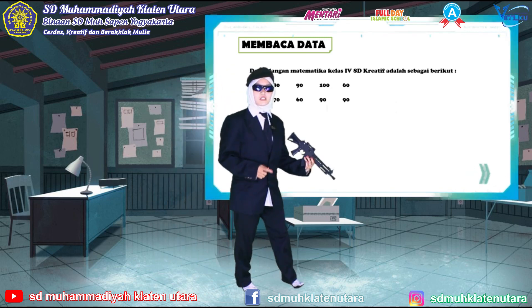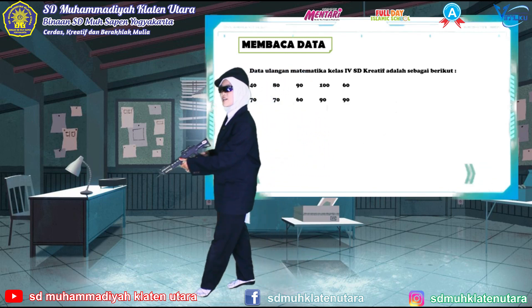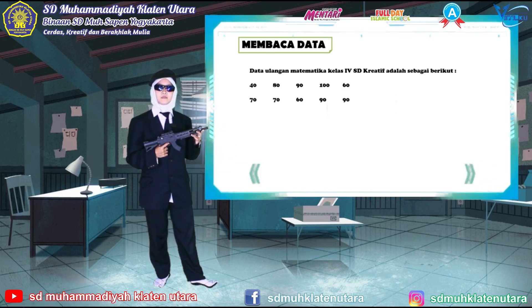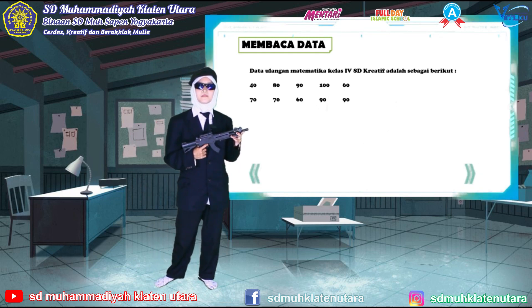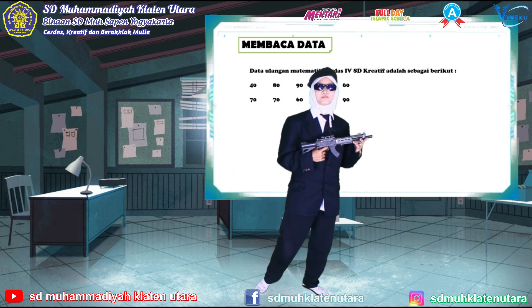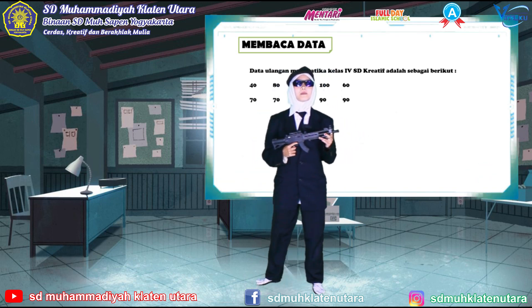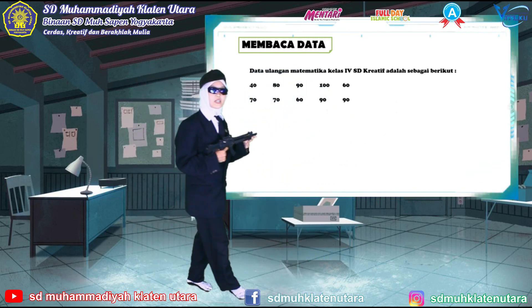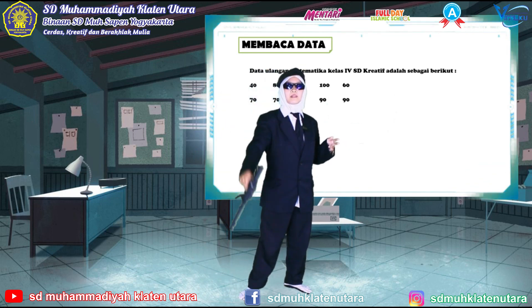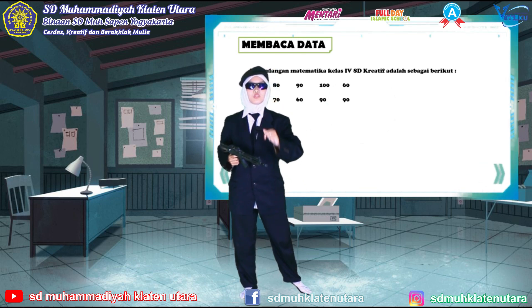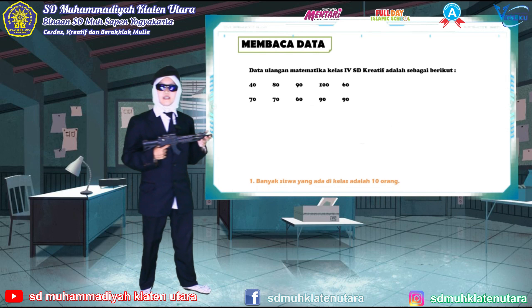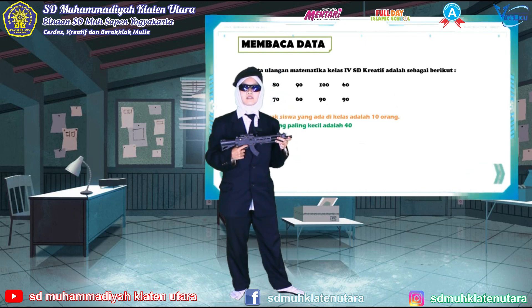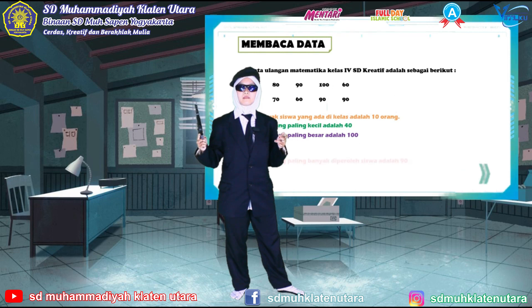Dari data tersebut, bisa kita lihat yang pertama: banyaknya siswa yang ada di kelas adalah berapa? Betul, 10 orang. Kita juga bisa lihat dari data tersebut nilai yang paling kecil adalah berapa? Ya, benar sekali, 40. Nilai yang paling besar adalah berapa? Betul sekali, 100. Silahkan dicermati, ini adalah misi yang paling ringan tapi memerlukan ketelitian. Ingat, ketelitian.